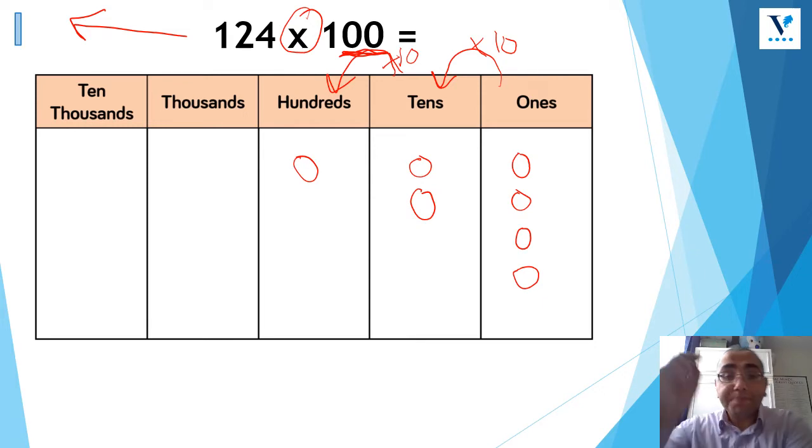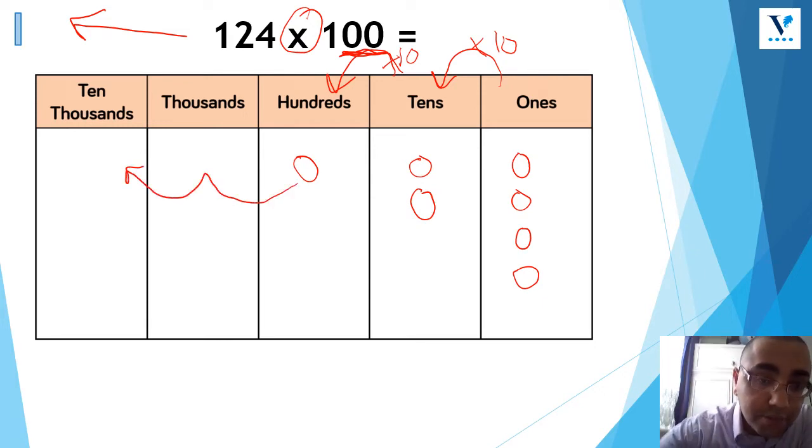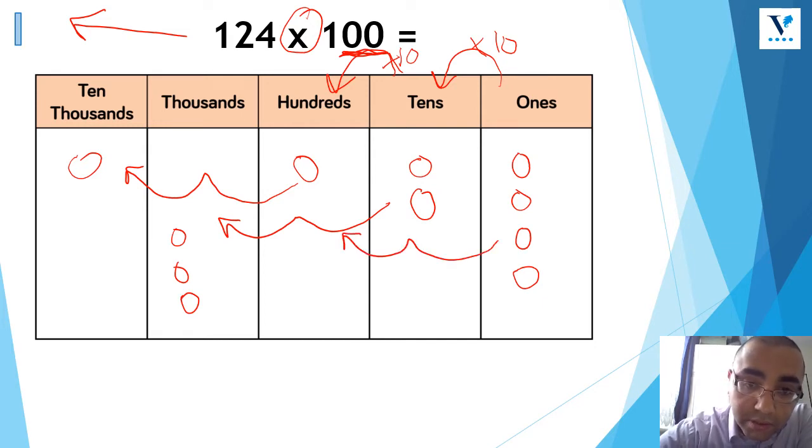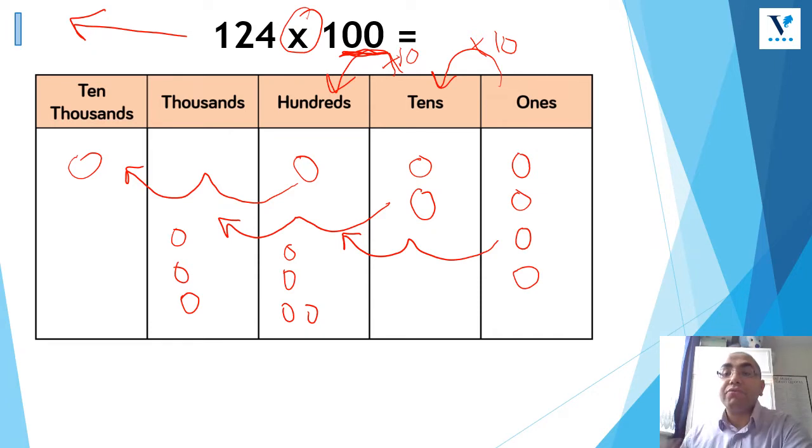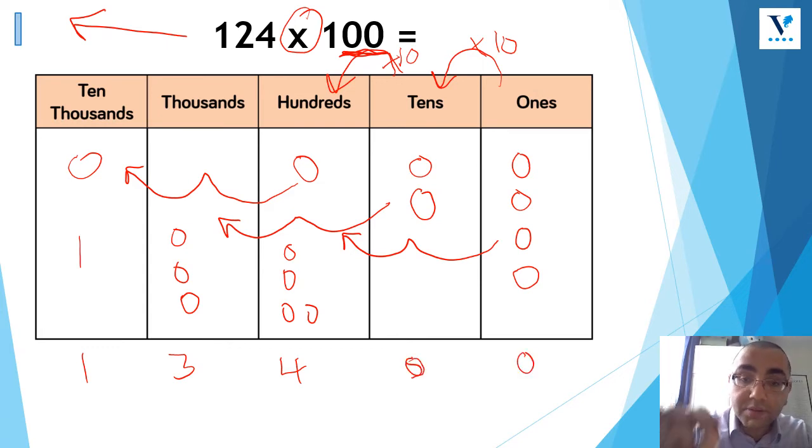So let's start off with the 100. So I'm going to move it two places to the left. That's 1, 2. The tens, 1, 2. And finally, the ones, 1, 2. So now I've got to read my new numbers. So I've got 1. There's going to be a 1 in the 10,000s column. There's going to be 3,000s. There are 400s. And now there are no tens and no ones. So my new number is going to become 13,400. So 124 times 1000 is going to be 13,400.